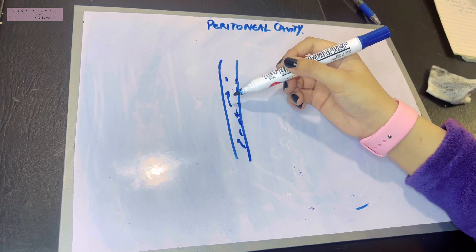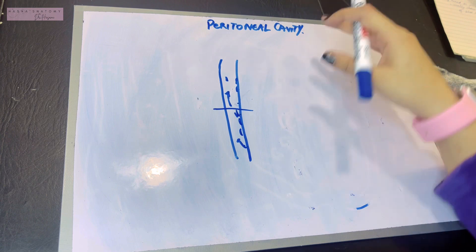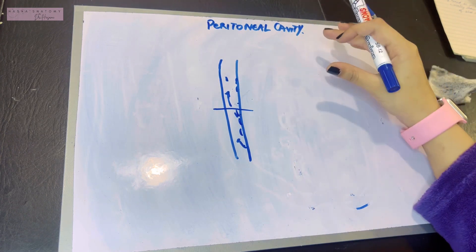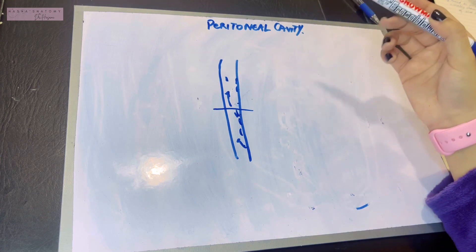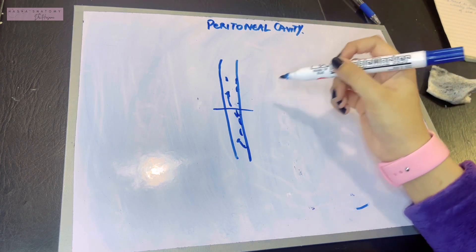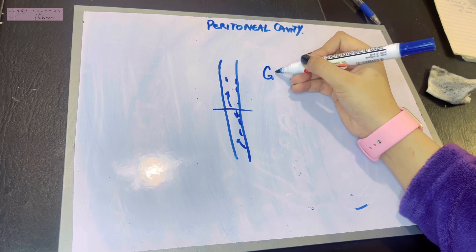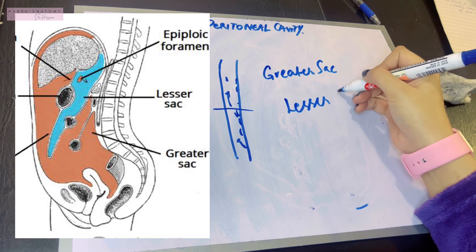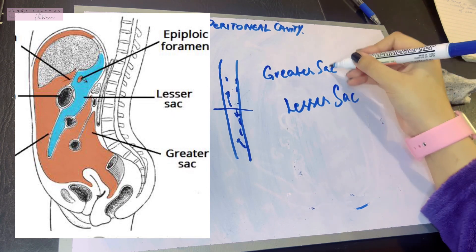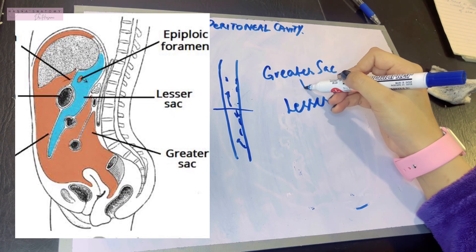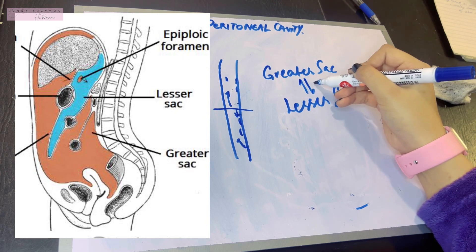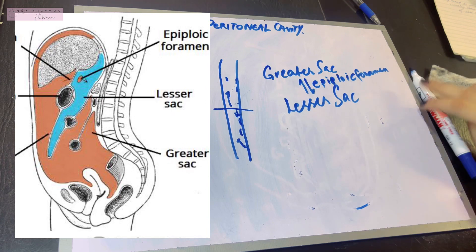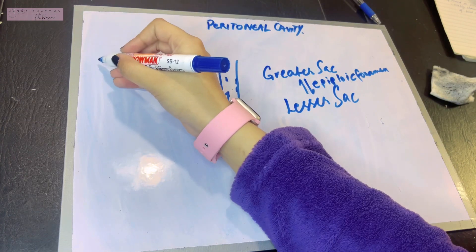The peritoneal cavity is divided into two parts — this is something very unique to it. Because there are folds of the peritoneum, the peritoneal cavity is divided into two parts: one is known as the greater sac and the other is known as the lesser sac. The point where the greater sac and lesser sac communicate with each other is known as the epiploic foramen.